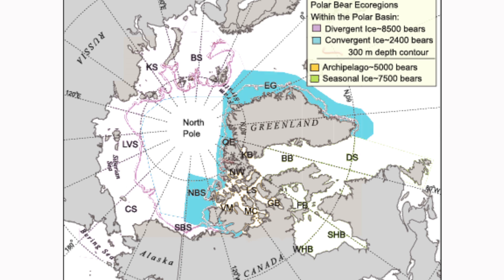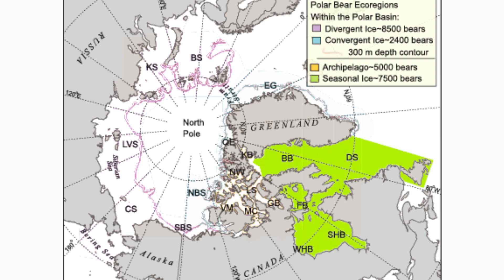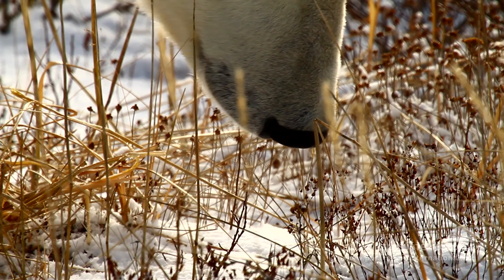Just to the south of the convergent ice ecoregion we have the archipelago ecoregion, and a little bit farther south and east we have the seasonal ice ecoregion. So we have four major ecoregions that are defined by how the sea ice forms and changes throughout the year and how polar bears respond to those changes.